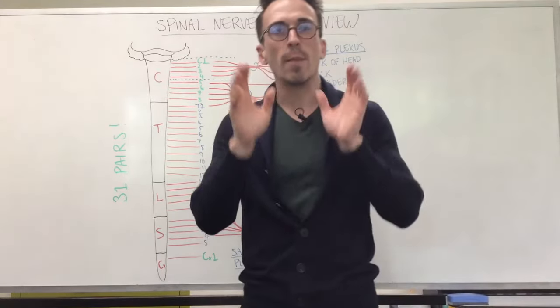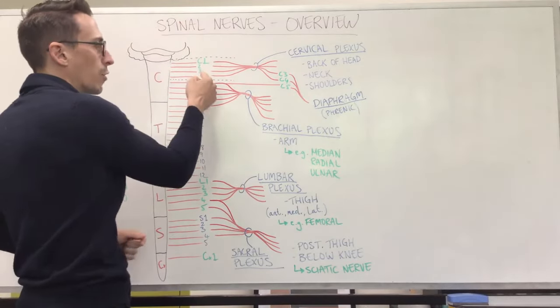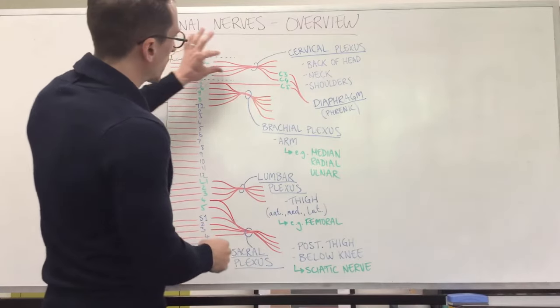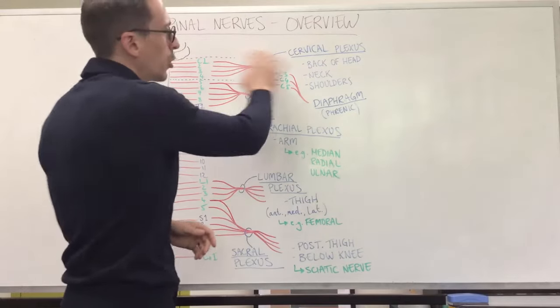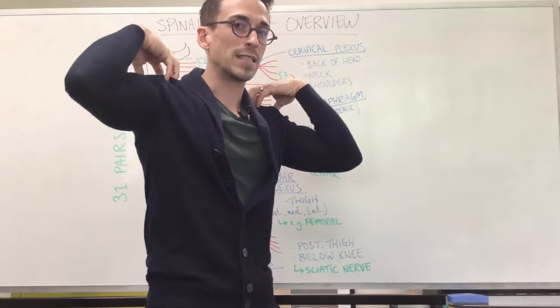So first, cervical nerve plexus, the first to fourth cervical nerves, C1, C2, C3, C4, all come together to form a bundle and branch again. And this is termed the cervical plexus. These nerves innervate the back of the head, the neck and the shoulders for sensation and movement.